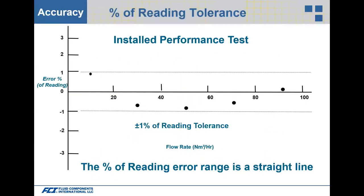On the chart, the left-hand side shows percent error based on reading — ±1% of reading across the flow range from 20 up to 100 normal cubic meters per hour. The repeatability is just one percent, and all the dots line up within that one percent band.